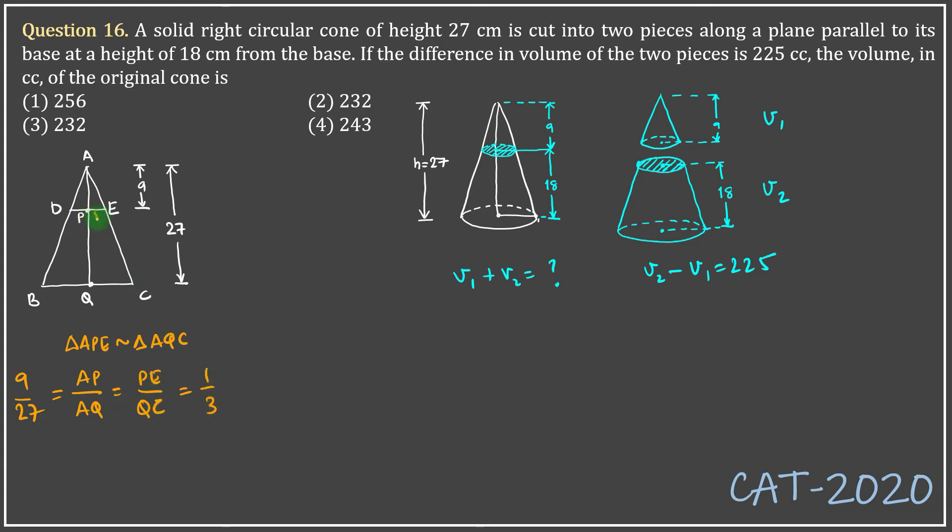So if this is r, then this will be 3r. Now I will not use the volume of frustum formula here. I will just find the volume of the frustum using volume of the total cone v0 minus volume of the smaller cone v1. Volume of the overall cone is equal to 1/3 πr²h, but the radius of the larger cone is 3r, so it will be (3r)² times h which is 27.